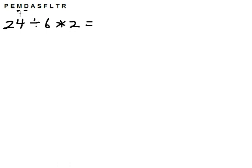Do we do multiplication first because it comes before division? No. Multiplication and division are done before addition and subtraction, but if you're choosing between multiplication and division, you've got to do it from left to right. Also, if you're choosing between addition and subtraction, you've got to do it from left to right.